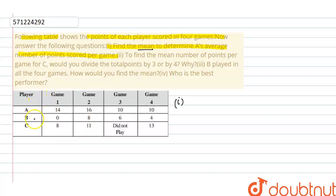This is the table with players A, B, and C. Game 1, game 2, game 3, game 4 data are given, in which player C has not played game 3. According to the question, we have to find the mean for player A. The formula is total points of A in all games divided by number of games A played.